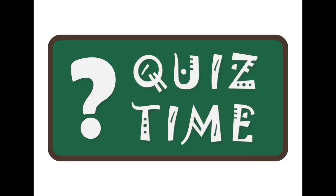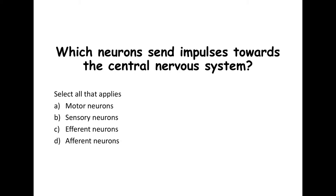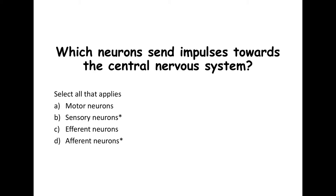It's quiz time. The brain and spinal cord belong to which branch of the nervous system — peripheral, central, or both? Hopefully you picked central nervous system. Which neuron sends impulses towards the central nervous system? Is it motor neurons, sensory neurons, efferent neurons, or afferent neurons — select all that apply. If you selected sensory or afferent, you're correct — they're the same thing, they're interchangeable names. You may see either on a test or exam, so make sure you know that sensory and afferent are the same.